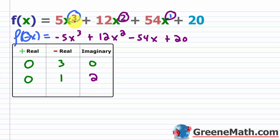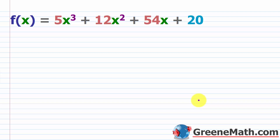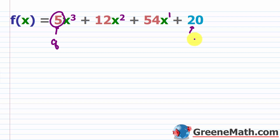This already narrows things down for me. I know that in terms of real solutions, I'm only looking for negative ones. So if I do my rational roots test, I can throw out all the positives — I don't even need to look at those. For the rational roots test, the polynomial needs to be in standard form. You want to look at the leading coefficient, which is five — that's the leading coefficient because it's on x cubed, the highest power. This is where I get my Q's from — all the factors of five. The constant term is where I get my P's from — all the factors of 20.